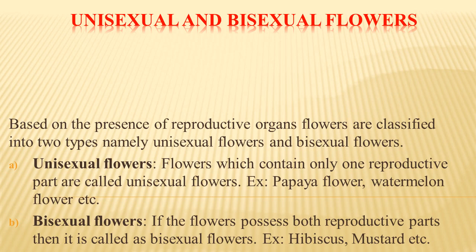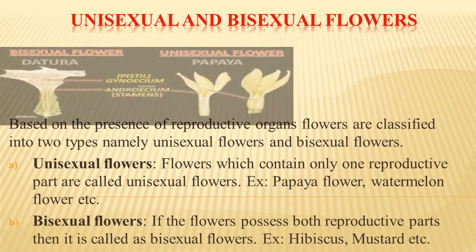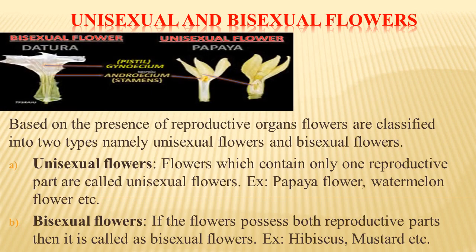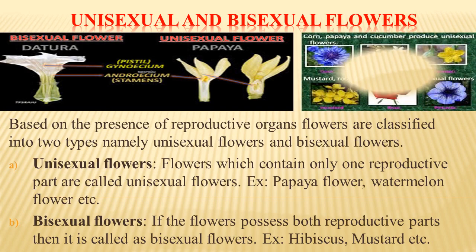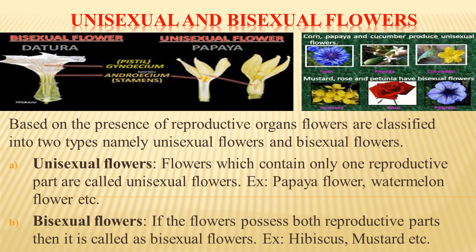Bisexual flowers contain both reproductive parts — both male and female. Examples of bisexual flowers are hibiscus, mustard, rose, and petunia. You can see images of unisexual as well as bisexual flowers here. Corn and cucumber are also examples of unisexual flowers.